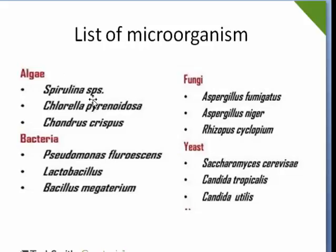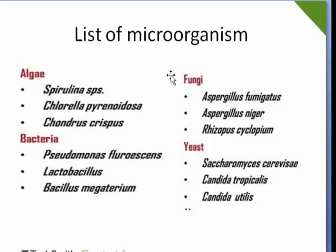Spirulina sp. is one of the most commonly used organisms in single cell protein. Other types include Saccharomyces cerevisiae, which is also widely used. Candida utilis is also used, Aspergillus niger is mostly used, and Pseudomonas fluorescens is also used. That is a list of microbes that are dried and made into single cell protein.